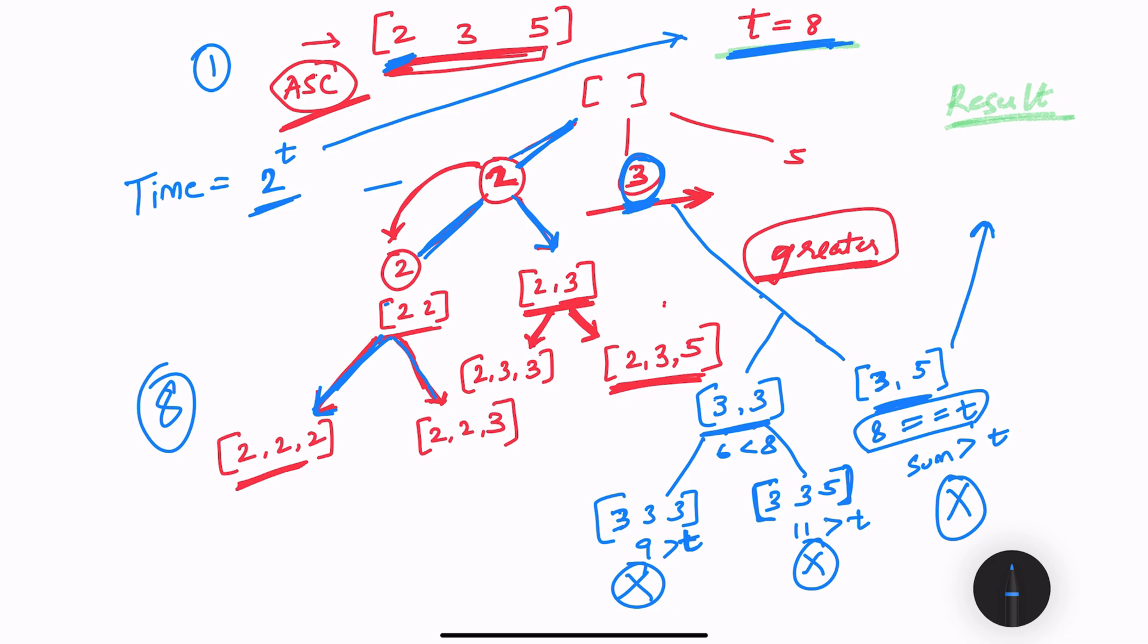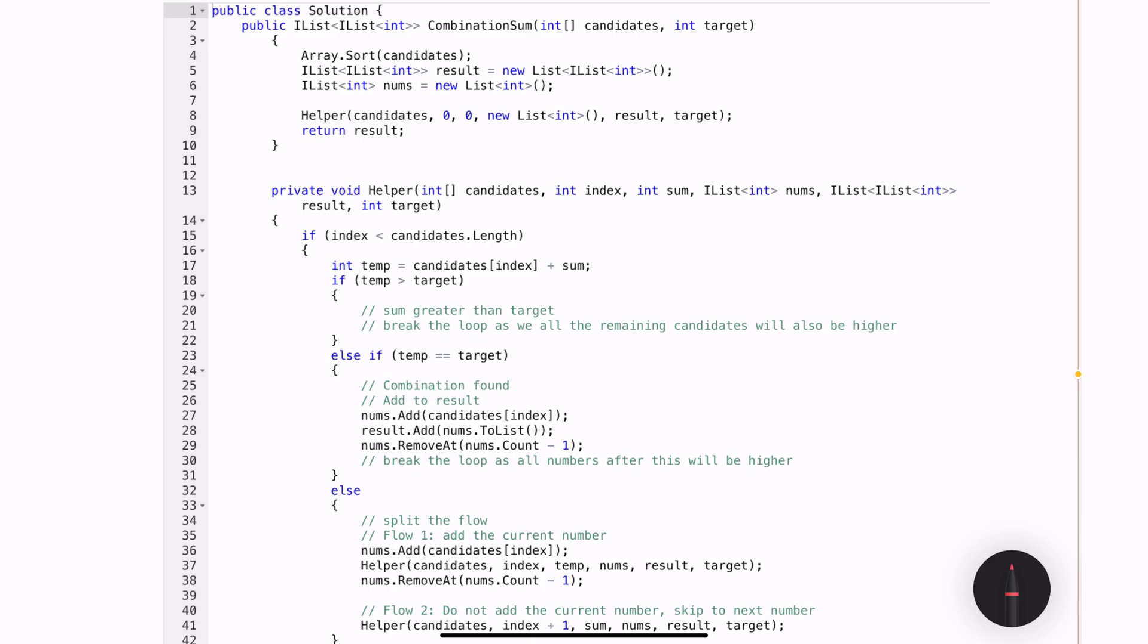Let me show you how we can implement the same logic using C#. Here is my C# solution. In the main method, I first organize or sort my array in the ascending order, then I am initializing a result variable which will hold all of the arrays, then I call this helper method.